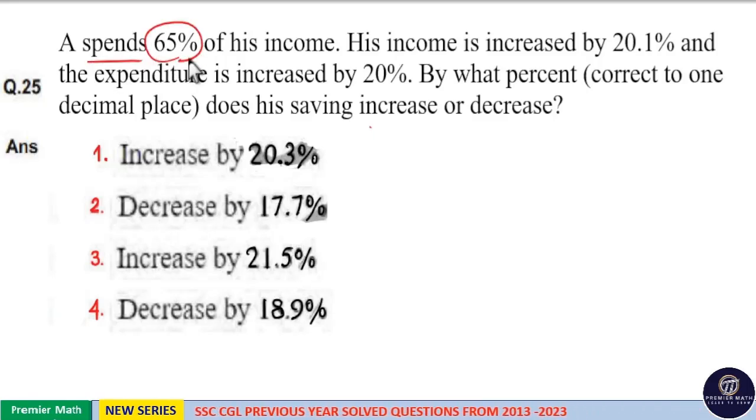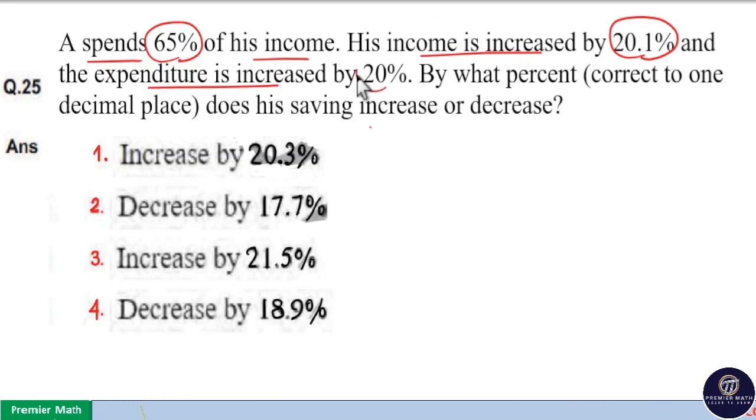He spends 65% of his income. His income is increased by 20.1% and the expenditure is increased by 20%. By what percentage does his savings increase or decrease?